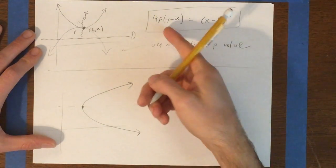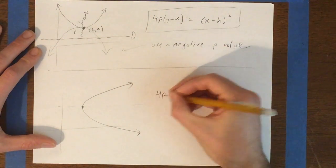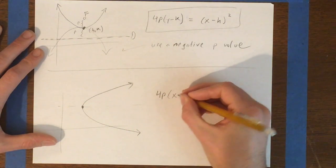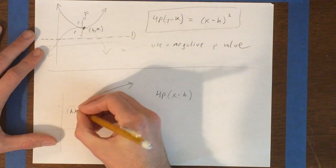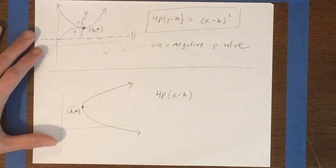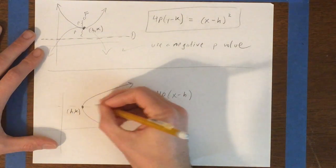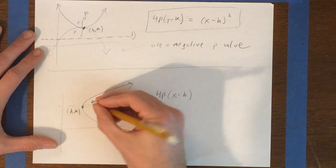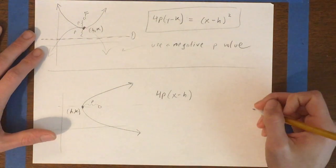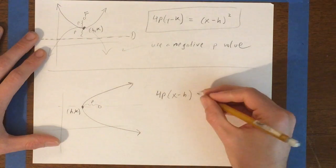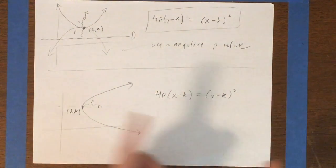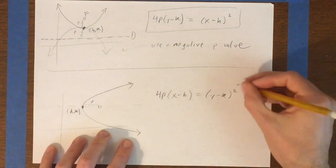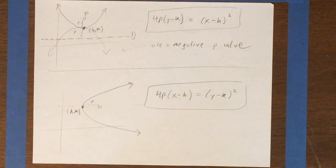So instead of 4p times (y - k), we're going to have 4p times (x - h). Still where this is still (h,k), that's the coordinates of the vertex. And this is still p units away right there. So 4p(x - h) = (y - k)². So the roles of the x and the y have swapped places and now we have a different equation.